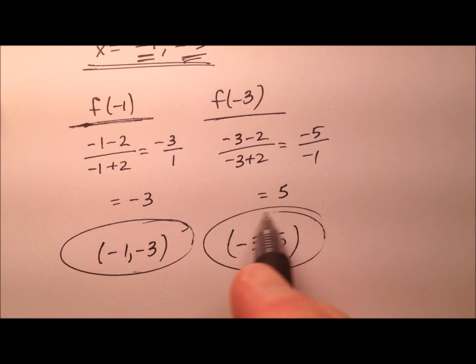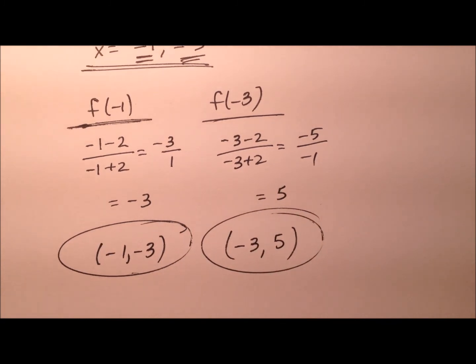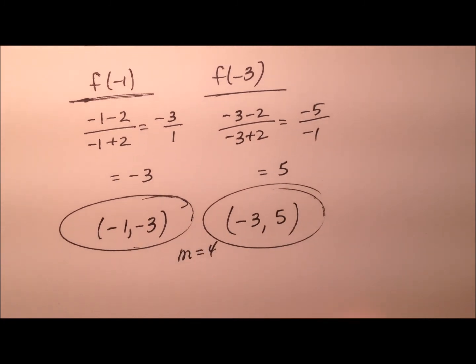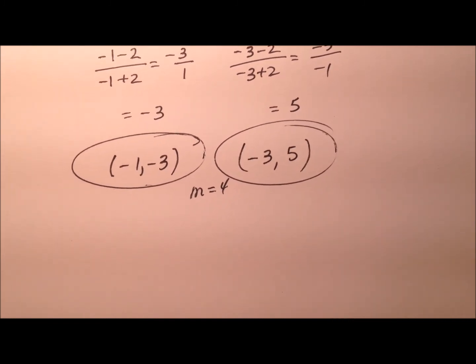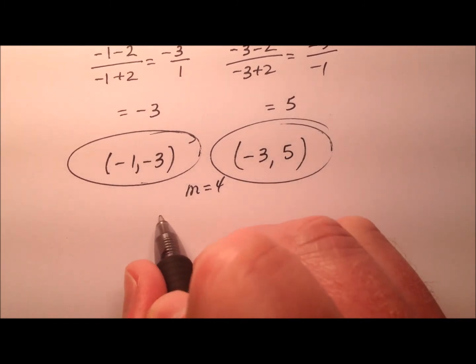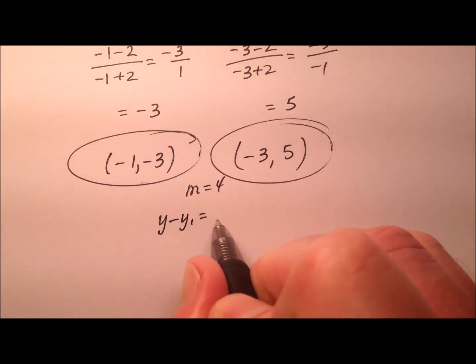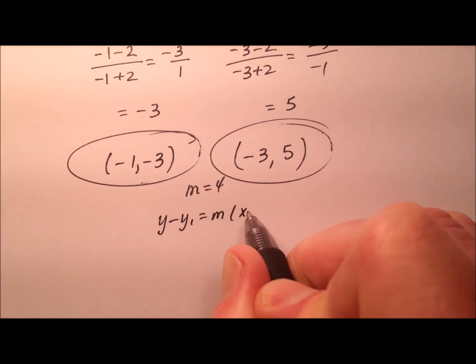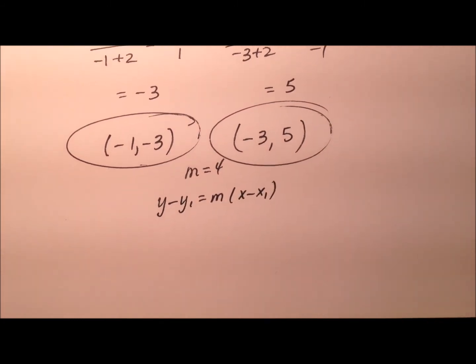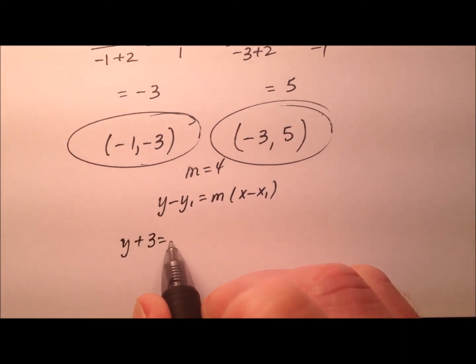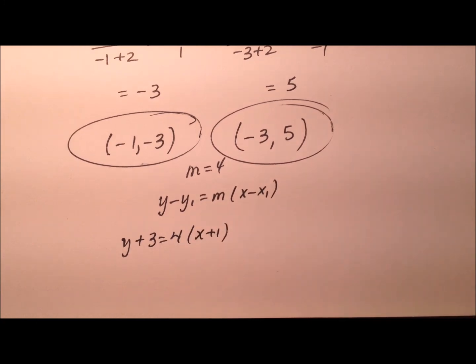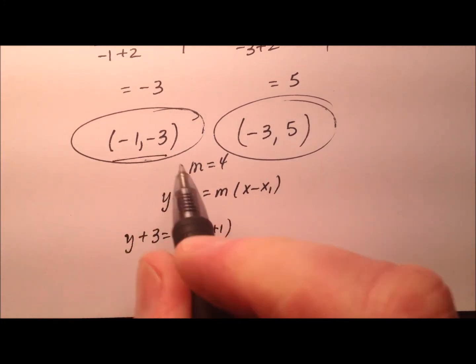All right. Well, two separate ordered pairs. So two points of tangency here that we need. And the slope was 4. So I need two different lines. So let's go ahead and write each one of these lines in point slope form. So y minus the y coordinate equals the slope times the quantity x minus the x coordinate. So y plus 3 equals 4 times x plus 1. And that's for this ordered pair.